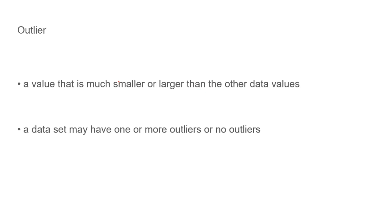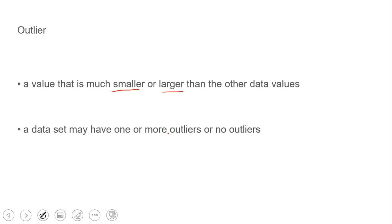The outlier is the weirdo in this situation — the one that really just doesn't belong. It's much smaller or much larger than the others. There can be one or more outliers, or no outliers at all.